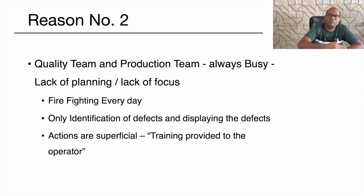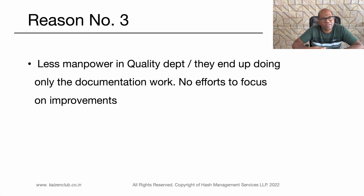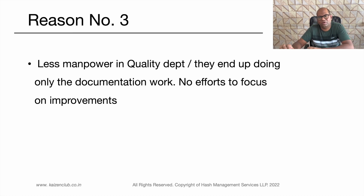This is again due to lack of training. The third reason is lack of manpower in the quality department. Sometimes organizations reduce the number of quality people to cut costs. As a lean practitioner, we believe quality team and production team should work together to solve problems. With less manpower, it is very difficult to manage, and people focus on day-to-day data collection and presentation rather than focusing on solving issues.